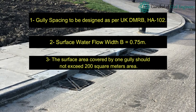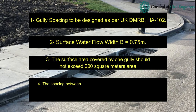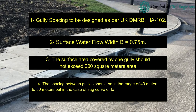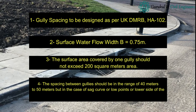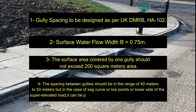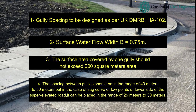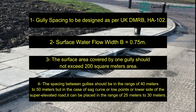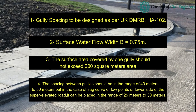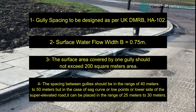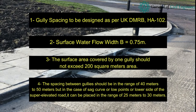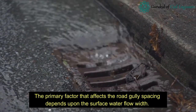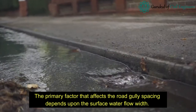The surface area covered by one gully should not exceed 200 square meters. The spacing between gullies should be in the range of 40 to 50 meters, but in the case of a sag curve, low points, or the lower side of a super-elevated road, it can be placed in the range of 25 to 30 meters.